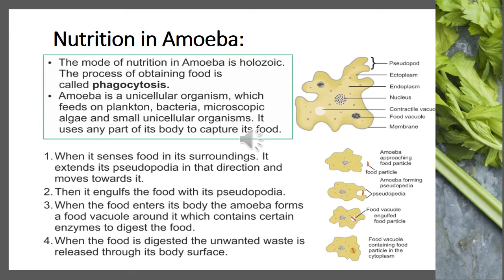Amoeba feeds on microscopic plants and animals through false feet, also called pseudopodia. We'll see stepwise how food is taken in and digested by amoeba. When it senses food in its surroundings, it extends its pseudopodia — the false feet — in that direction and moves towards the food.